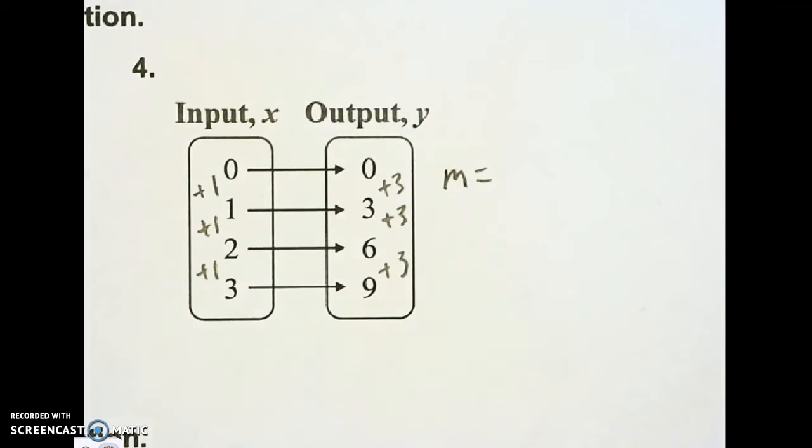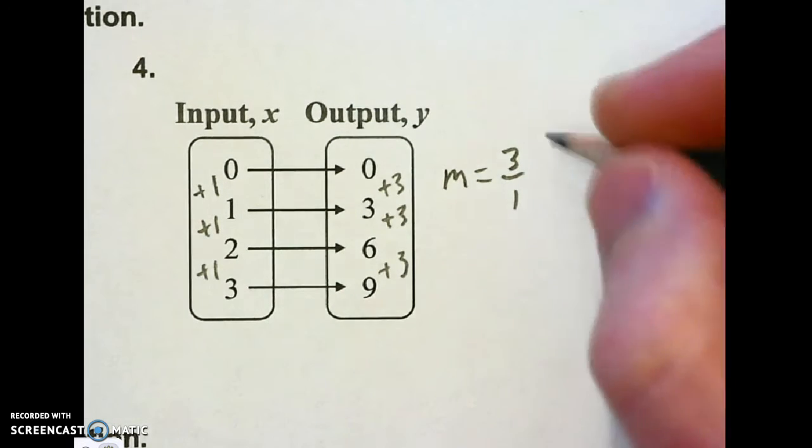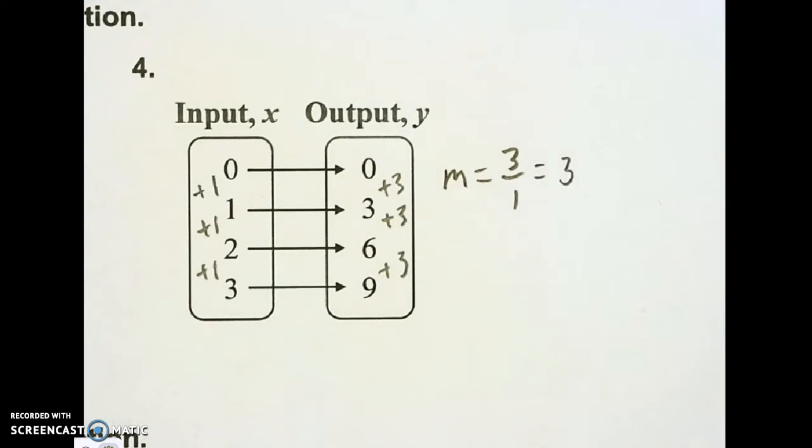So rise over run, y over x. I got 3 over 1. There's my slope. I'm going to reduce it so it's not a fraction to just 3.